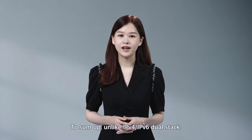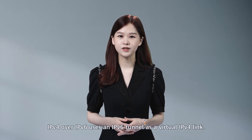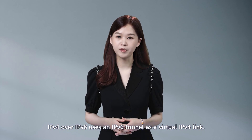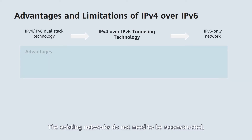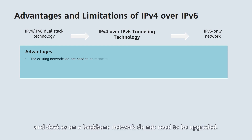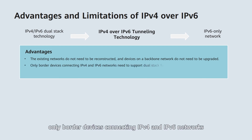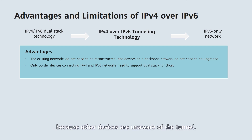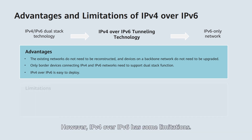To sum up, unlike IPv4 and IPv6 dual stack, IPv4 over IPv6 uses an IPv6 tunnel as a virtual IPv4 link. The existing networks do not need to be reconstructed, and devices on a backbone network do not need to be upgraded. In addition, only border devices connecting IPv4 and IPv6 networks need to support dual stack and tunneling functions, because other devices are unaware of the tunnel. Moreover, IPv4 over IPv6 is easy to deploy. However, IPv4 over IPv6 has some limitations.